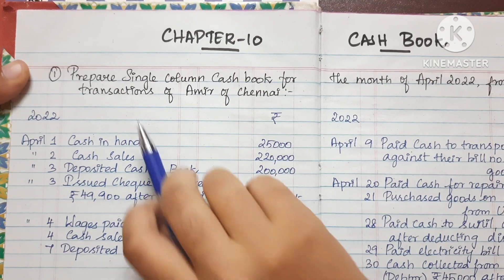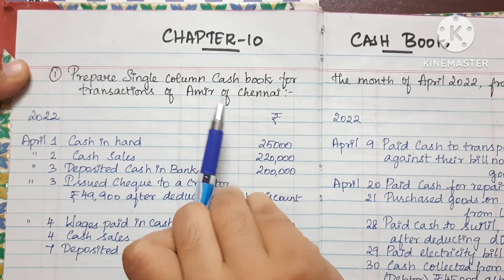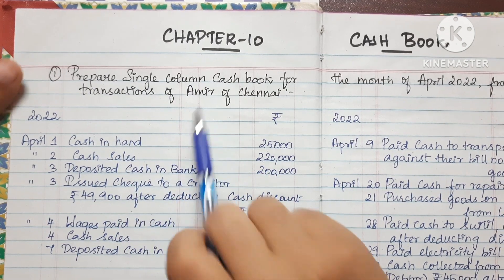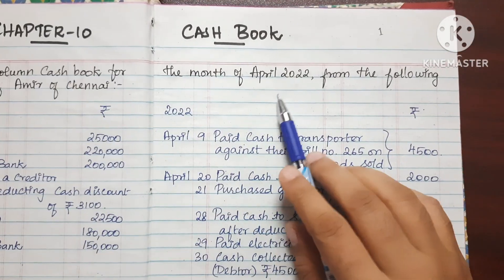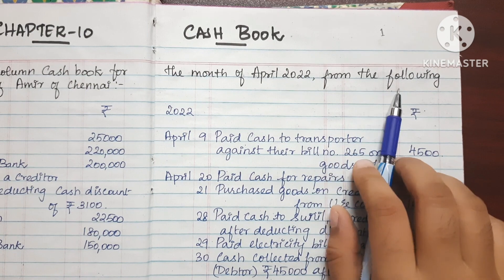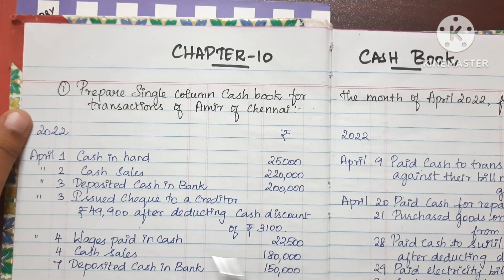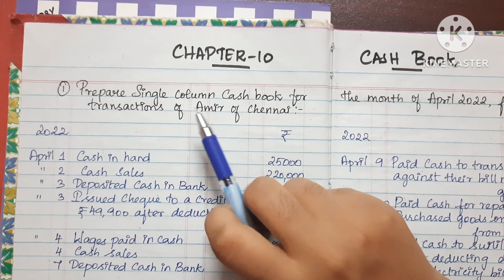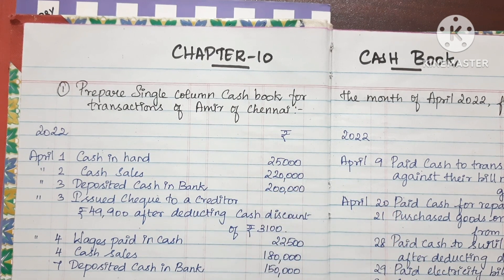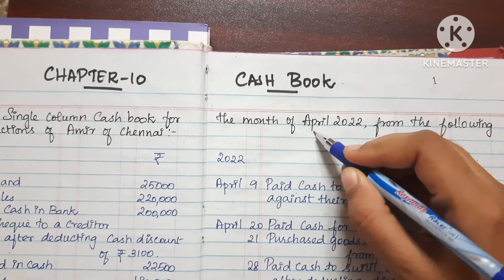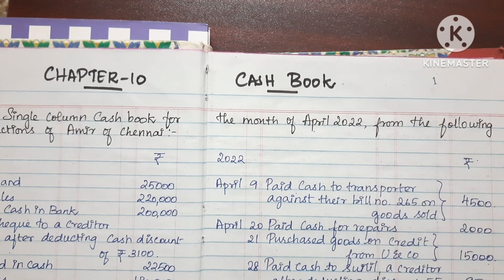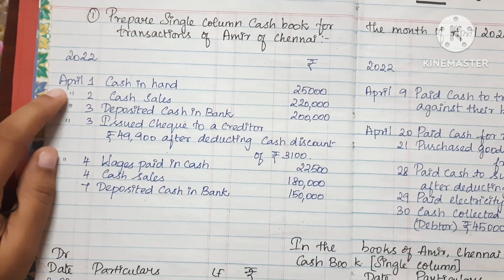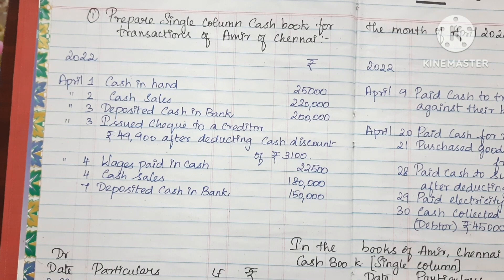In this video, we will see how to prepare a single column cash book for the month of April 2022 from the following transactions of Amar of Chennai. We will go through the transactions one by one and see the number of entries in the cash book.